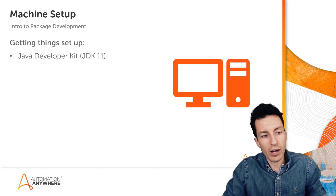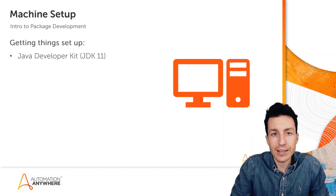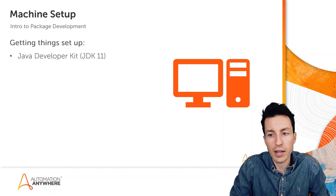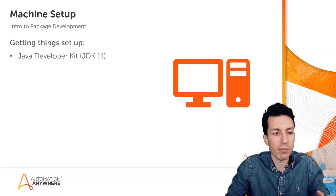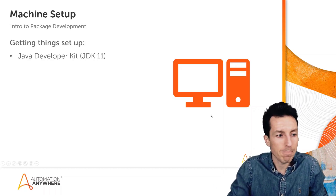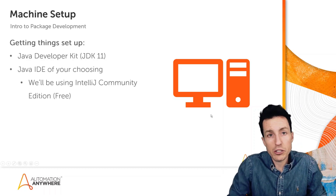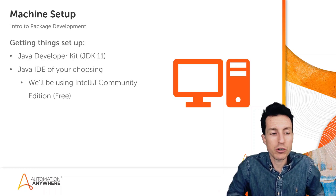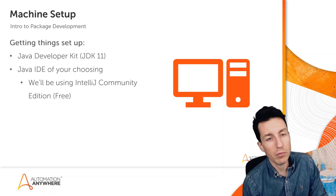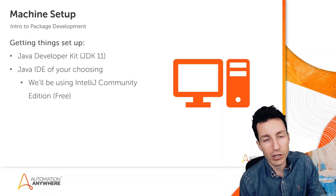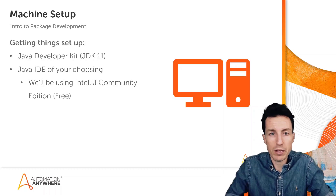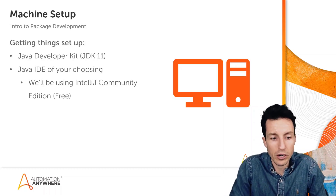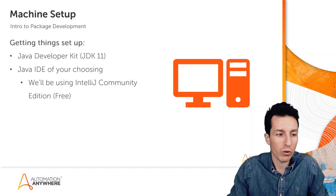First off, we will need JDK 11. This is available for free online — we're going to be downloading and installing it from Oracle, and this will allow us to do the development that we need. We also need a Java IDE, the development environment of your choosing. We'll be using IntelliJ Community Edition for this video, though you could use NetBeans, Eclipse, or something else.